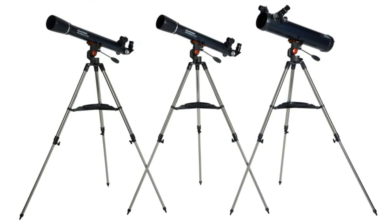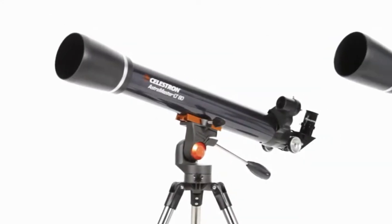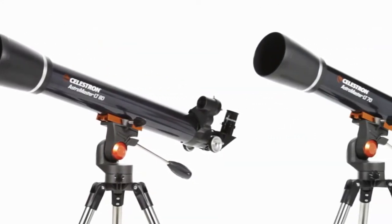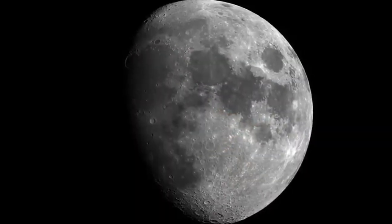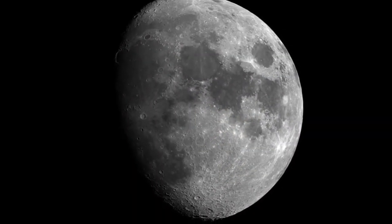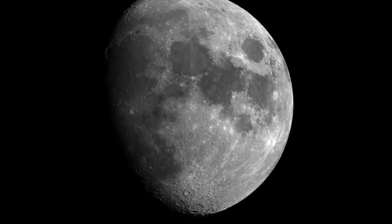There are three AstroMaster LT models to choose from. The compact 60- and 70-millimeter refractors reveal dazzling views of craters on the Moon, the rings of Saturn, the moons of Jupiter, the Orion Nebula, and many more of the most popular celestial objects.